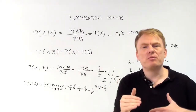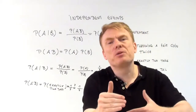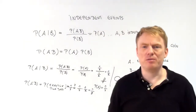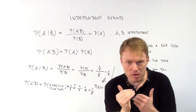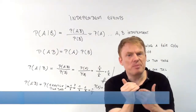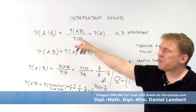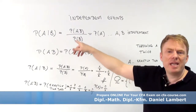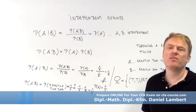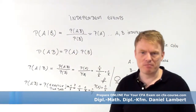They are either both true or neither of them is true. If neither of them is true, then A and B are dependent. If they are both true, then A and B are called independent events.